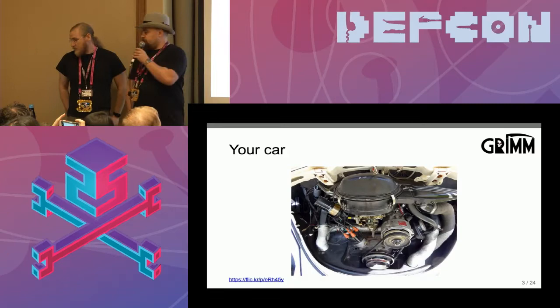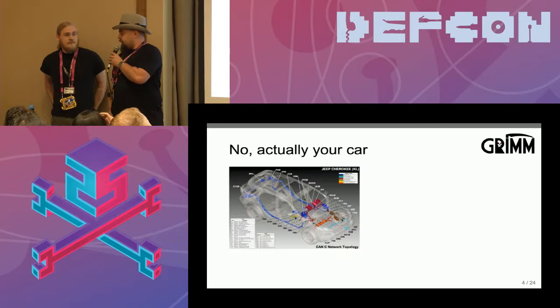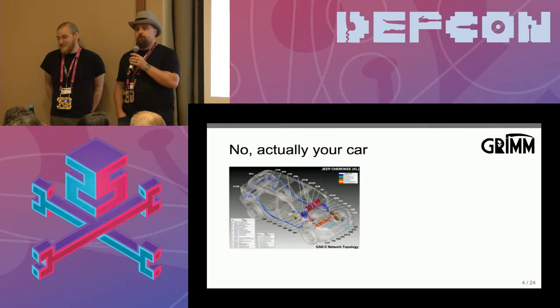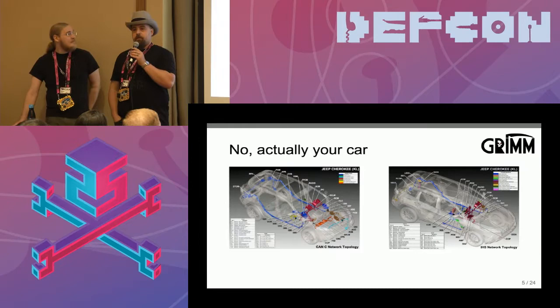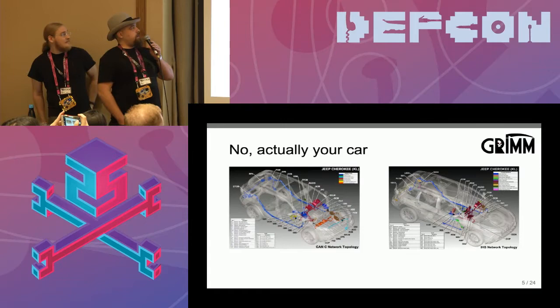So this is your car. This is what it looks like now. There aren't things like carburetors. You don't replace your jets and tweak your idle screws to tune your car anymore — you do it a little bit differently these days. Your car is actually a network — a bunch of different components connected over typically CAN bus and other types of buses. And actually, your car isn't a network. It's a whole bunch of networks.